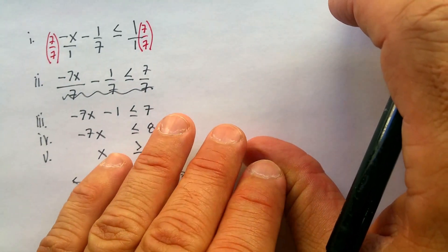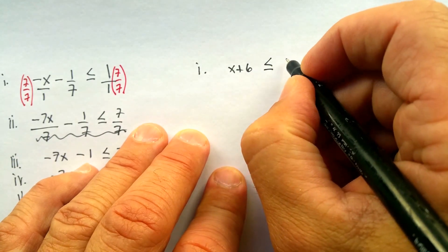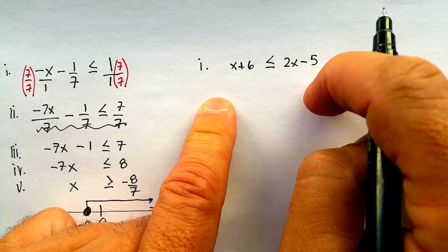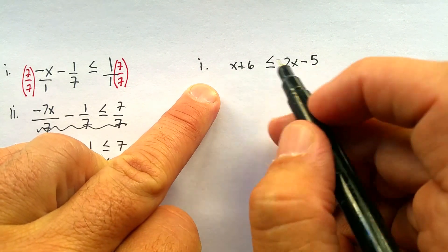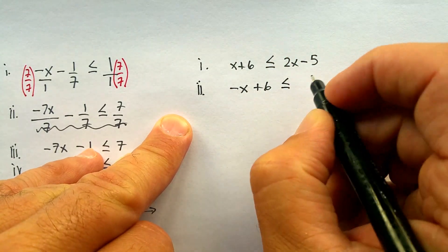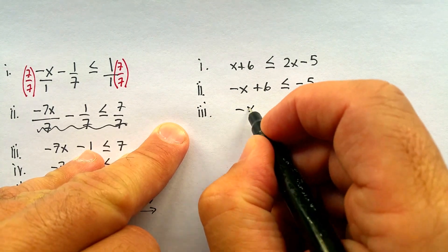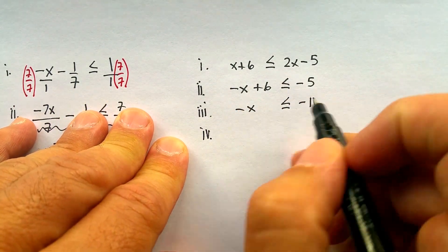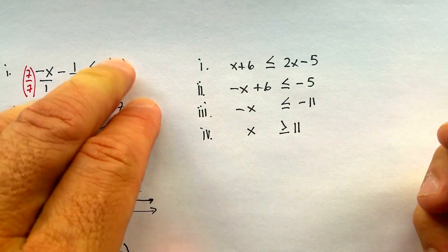One more example: x plus 6 is less than or equal to 2x minus 5. No fractions here, so no need to multiply by any form of 1. I want the x's on the left side, so I'll subtract 2x from both sides: negative x plus 6 is less than or equal to negative 5. Subtracting 6 from both sides: negative x is less than or equal to negative 11. Dividing by negative 1 flips the inequality: x is greater than or equal to positive 11.